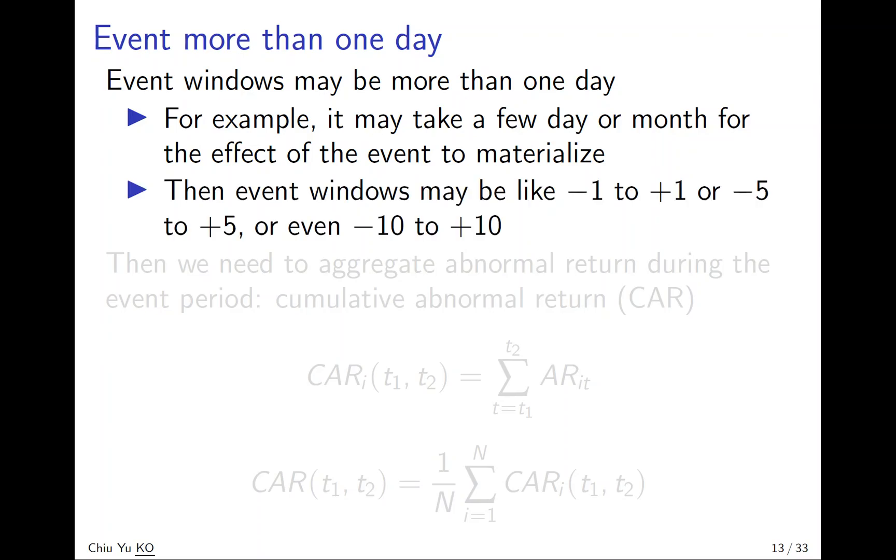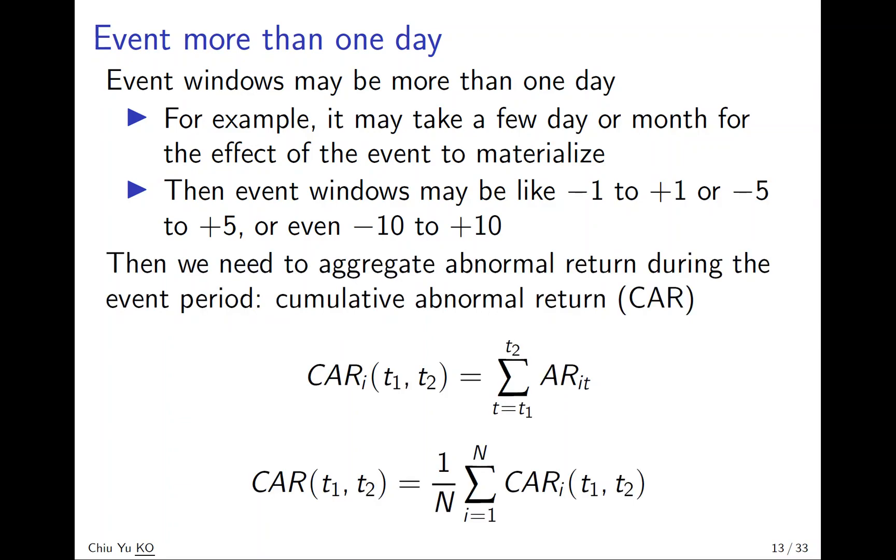So it can be sometimes negative 1, positive 1, negative 5 to positive 5, and even negative 10 to positive 10. So what we do is also very similar. We just add all the relevant days up. So what you do is we call the cumulative abnormal return, CAR.